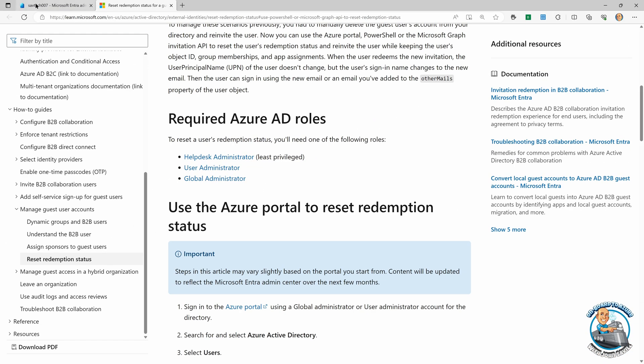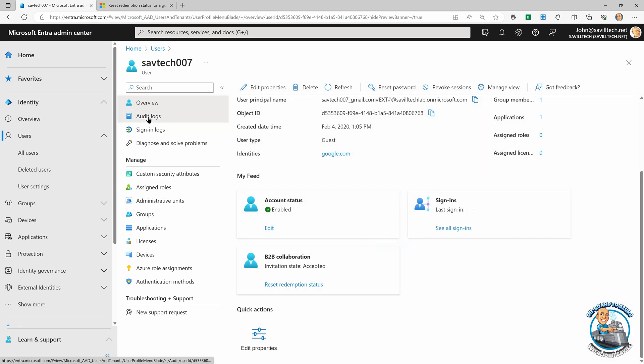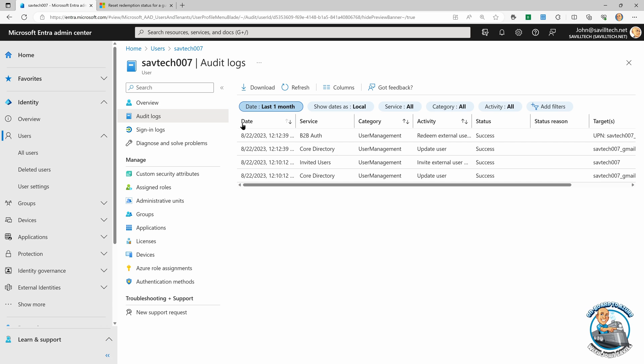And then once I hit this reset, you'll just hit the reset button, and it will clear out the link to the external identity. Now I did this already. So if we go back and look at the history, I already reset it.